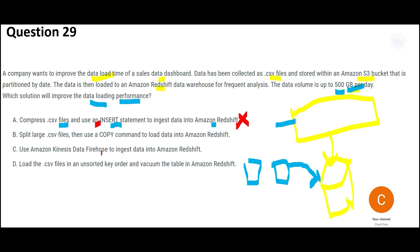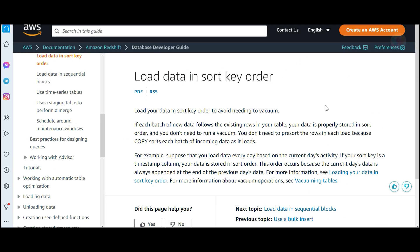Option C suggests using Kinesis. My thumb rule: if I see the words 'real time' or 'near real time,' I choose Kinesis. Since this scenario has no real-time requirement, Kinesis is wrong.